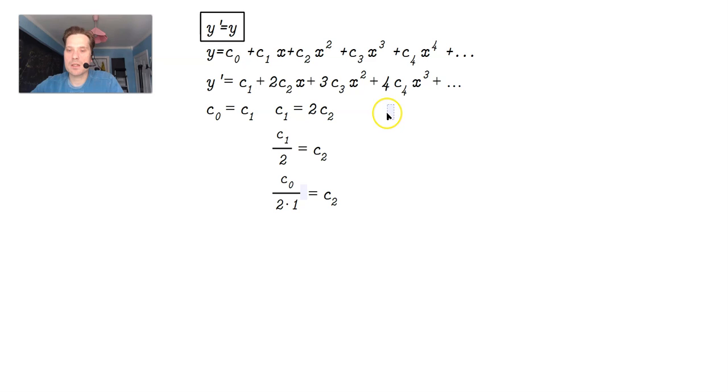Go on to the next one. Equate the next pair. So that means the ones on x squared. So that means c sub 2 should be equal to 3 c sub 0. So solve for c sub 0, I'm sorry, c sub 3. So c sub 2 divided by 3 is equal to c sub 3.